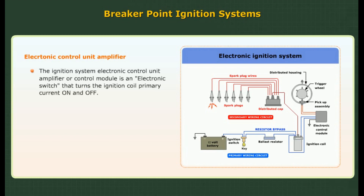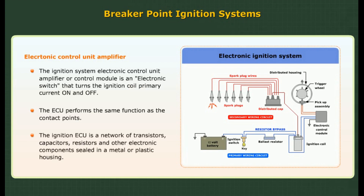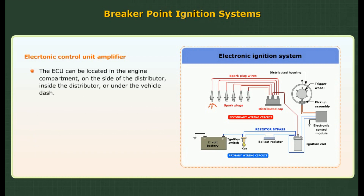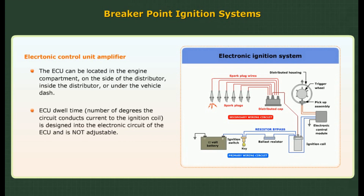Electronic Control Unit (ECU) amplifier: The ignition system ECU, also called the control module, is an electronic switch that turns the ignition coil primary current on and off, performing the same function as contact points. The ignition ECU is a network of transistors, capacitors, resistors, and other electronic components sealed in a metal or plastic housing. It can be located in the engine compartment, on the side of the distributor, inside the distributor, or under the vehicle dash. ECU dwell time — the number of degrees the circuit conducts current to the ignition coil — is designed into the electronic circuit and is not adjustable.